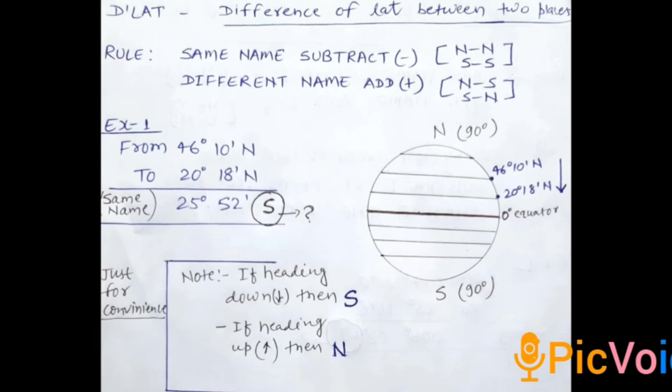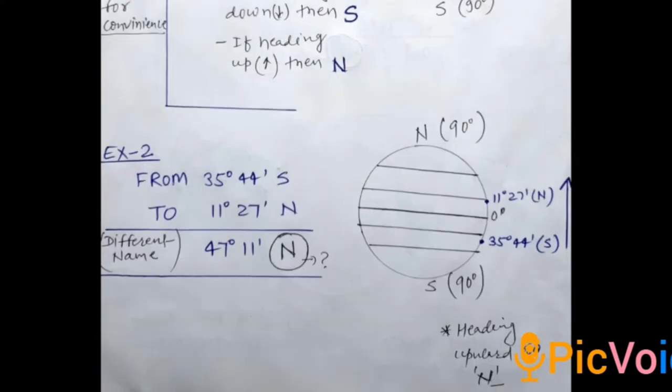We will be doing one more example. It will be crystal clear for you. This time we are moving from 35 degree 44 minute South to 11 degree 27 minute North. Here we have different names, so we will add. We got the answer 47 degree 11 minute.